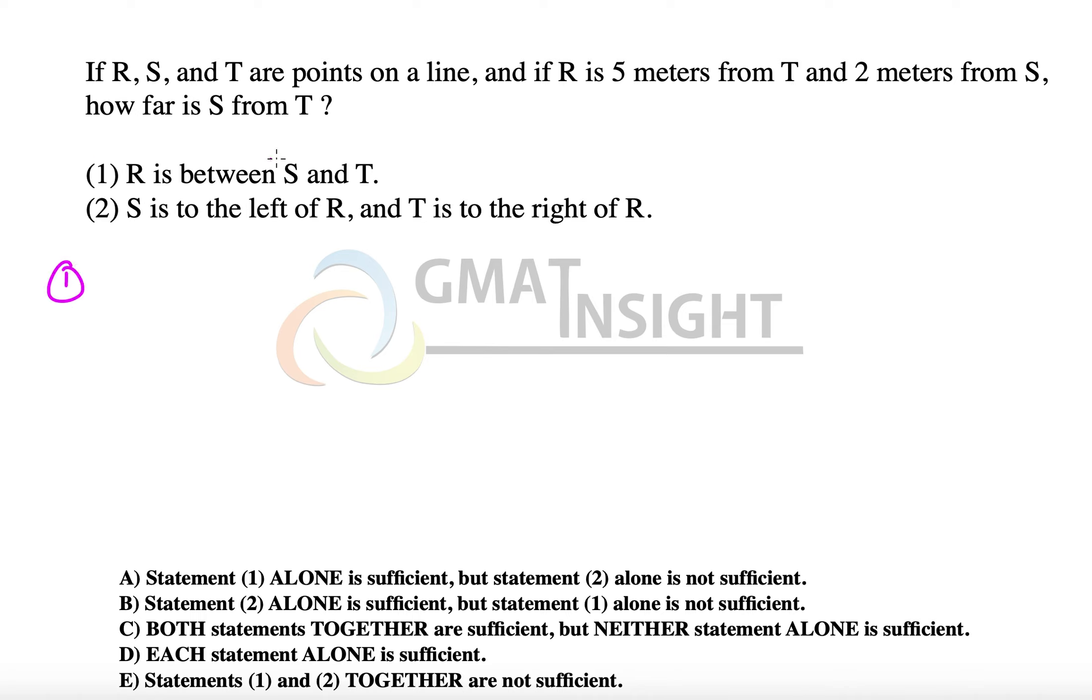We need to draw the figure to find where exactly R, S, and T are placed on the line. The first statement says R is between S and T. So let's quickly draw the line.